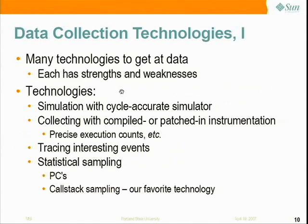There are lots of different technologies you can use to get at the data you want, each with strengths and weaknesses. One technology is a cycle-accurate simulator — great, you get really good data. Another way is compiled-in or patched-in instrumentation, which gives you precise execution counts. You can also trace interesting events like lock contention or malloc/free. Or — my favorite — you can do statistical sampling. Statistics work very well, and if you're interested in aggregate behavior over a significant run time, statistics are the best approach. You can sample either program counters or, as we prefer, call stacks, which gives you context about how you got to a hot spot.